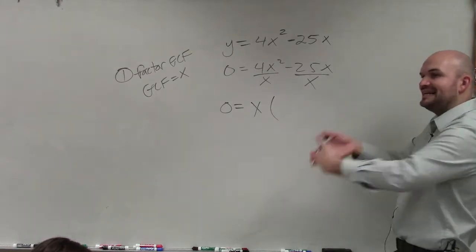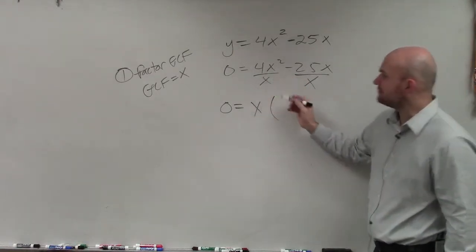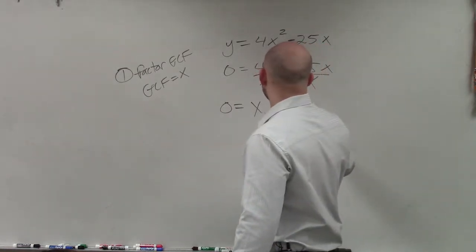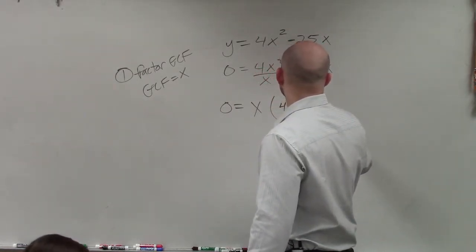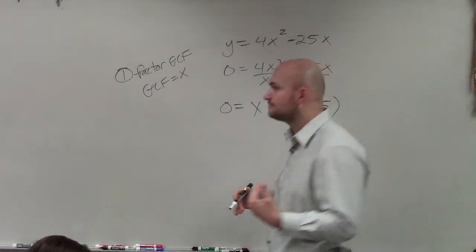Basically, what we're doing is we're dividing out our GCF. And when we divide out our GCF, we're left with 4x minus 25. All right? Now, why is the x on the outside?